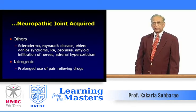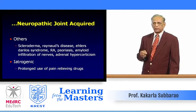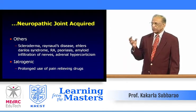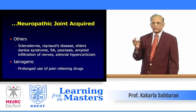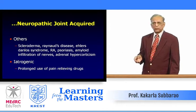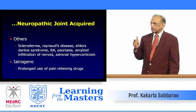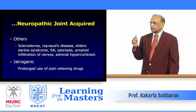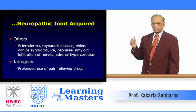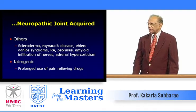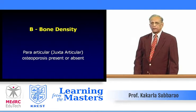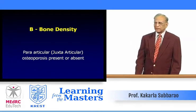For example, in rheumatoid arthritis of the hip, there is thinning of the acetabulum, telescoping of the femoral head into the acetabulum, multiple erosions, and almost complete resorption of the acetabular cortex and femoral head. Now we come to bone density.